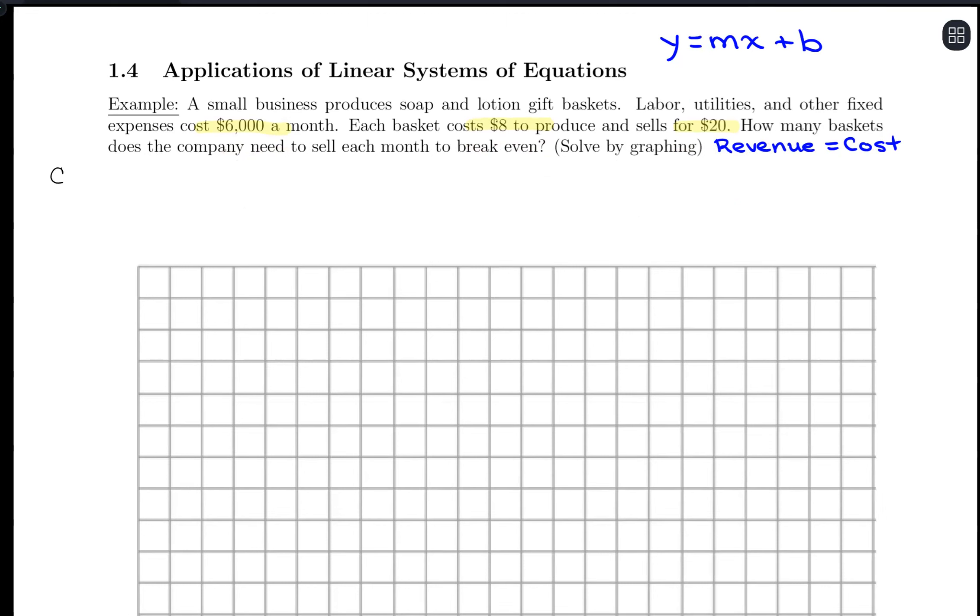Okay, so we're going to have an equation calculating cost. So cost is coming from there's a fixed cost of $6,000 per month. And then we are adding on a cost of $8 per basket. So let's go ahead and call x the number of baskets. So here we would have $6,000 plus $8x would be calculating cost. And let's go ahead and just set that equal to y.